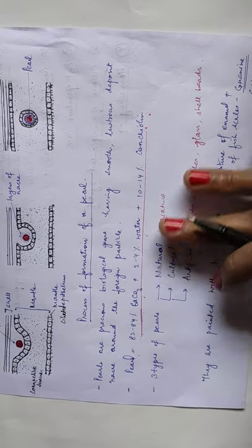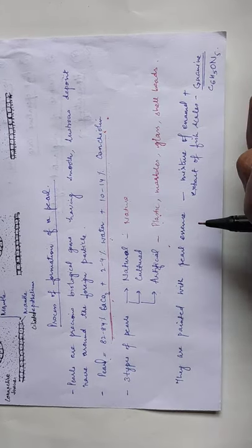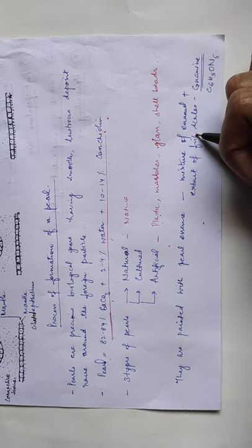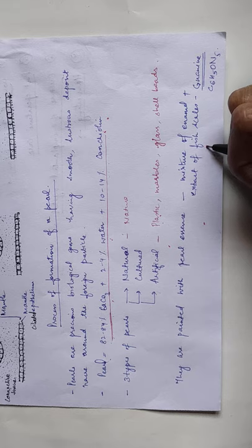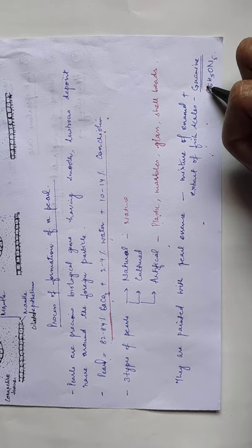So how do they paint them? When they paint them, they paint them with a mixture of enamel and extract of fish scale known as guanine.